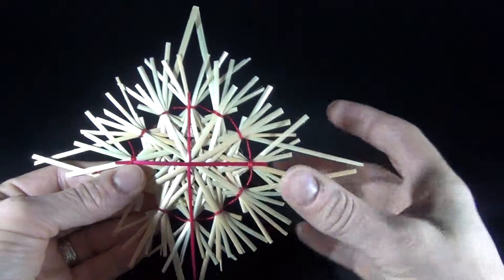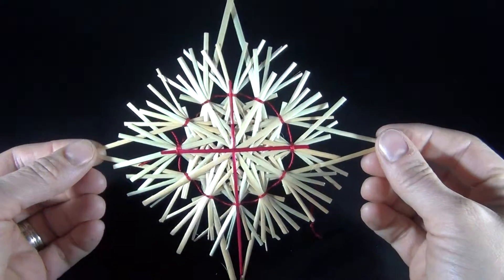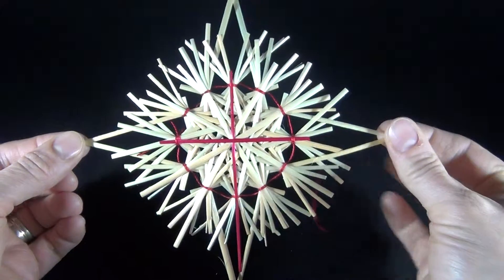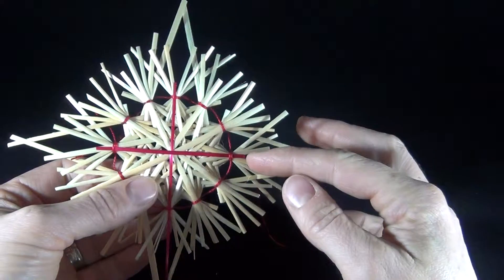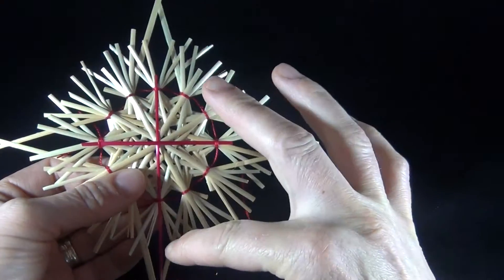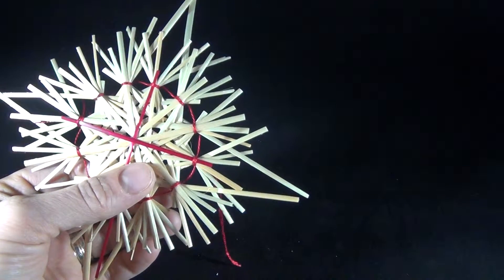You still get a pretty star, but you don't get that Star of Bethlehem look. So we're going to start by trimming the cross ends first to see if we can help avoid trimming those big ones.